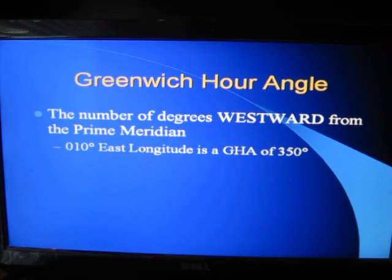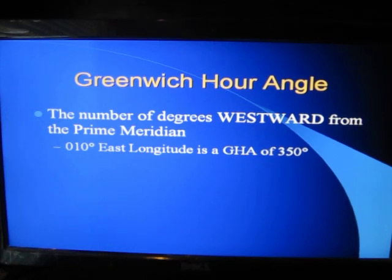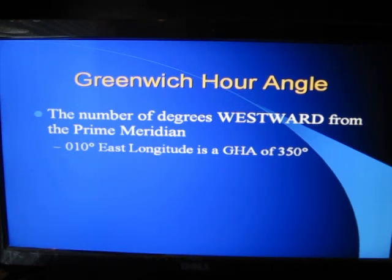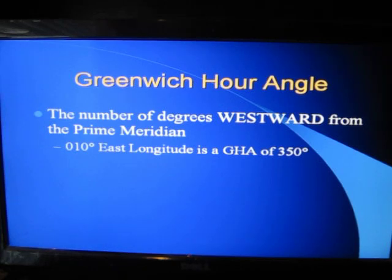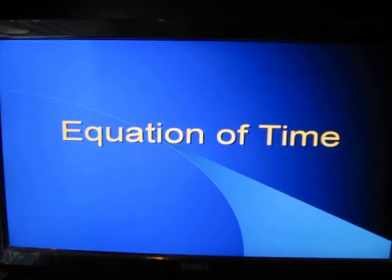Greenwich hour angle is important — that's how things are listed in the nautical almanac. It's the number of degrees westward from the prime meridian. Longitude goes east and west, but Greenwich hour angle is only measured to the west. For example, 010 east longitude is a Greenwich hour angle of 350 degrees. Make sure you understand that.